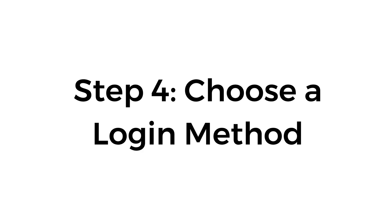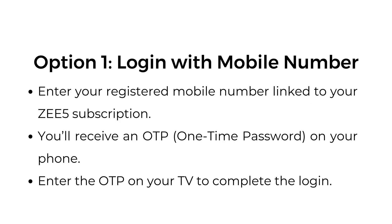Step number four: choose a login method. Option number one: login with mobile number. Enter your registered mobile number linked to your ZEE5 subscription. You'll receive an OTP — a one-time password — on your phone. Enter the OTP on your TV to complete the login.